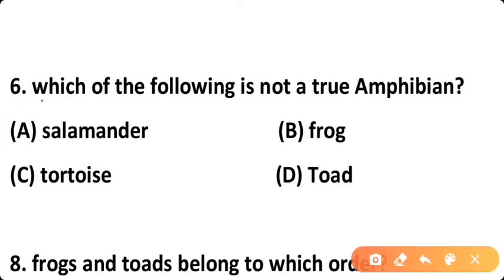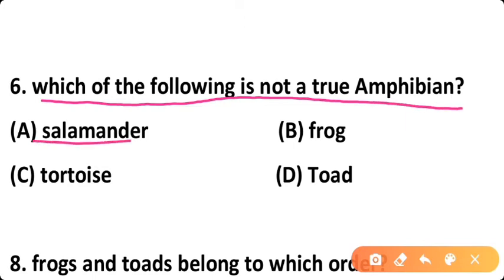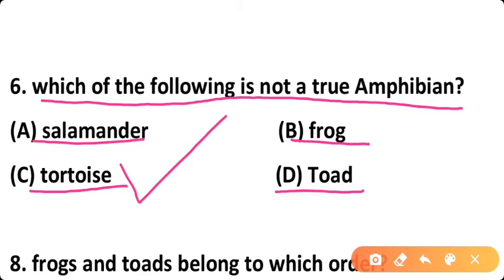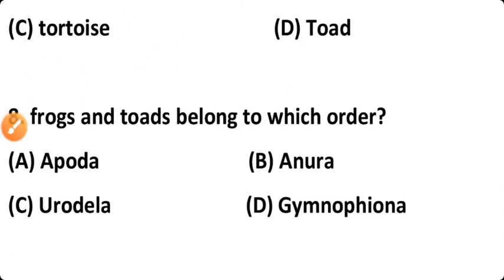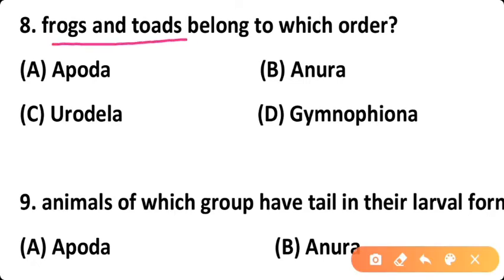Question six: Which of the following is not a true amphibian? Option A: Salamander, Option B: Frog, Option C: Tortoise, Option D: Toad. The correct answer is Option C — tortoise is not a true amphibian; rather it is a reptile belonging to order Chelonia.